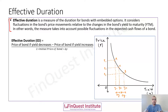For bonds with embedded options, the cash flow schedule can be affected by whether an option is exercised. For a plain vanilla bond, payments at specific time points are certain. However, when a bond has embedded options — whether an issuer call or an investor put — their exercise impacts the overall cash flows the bond generates.